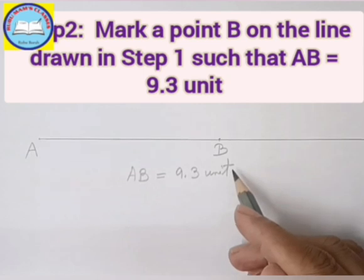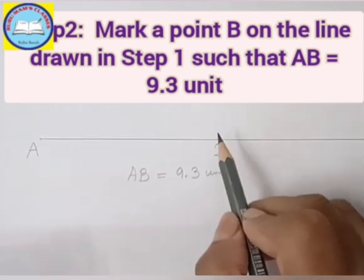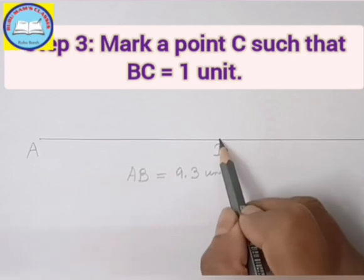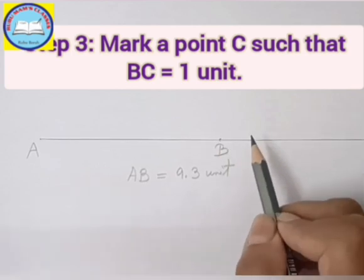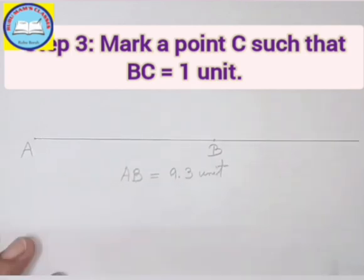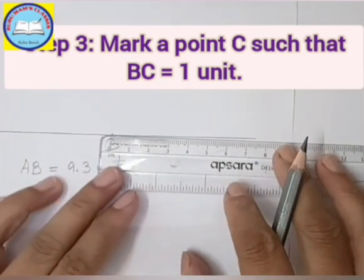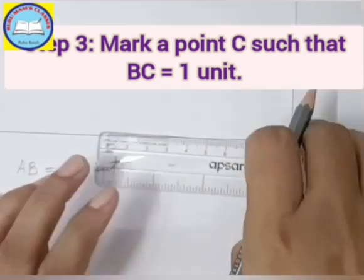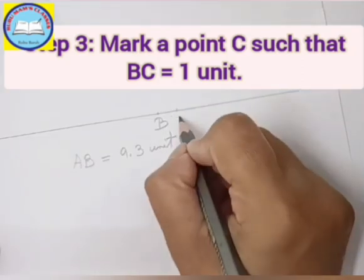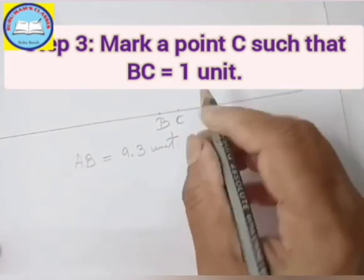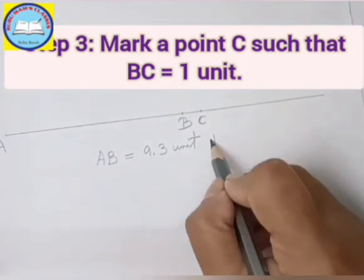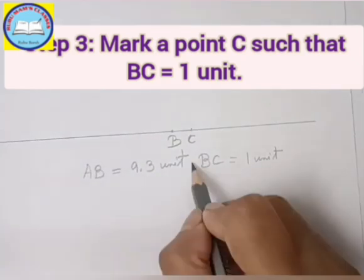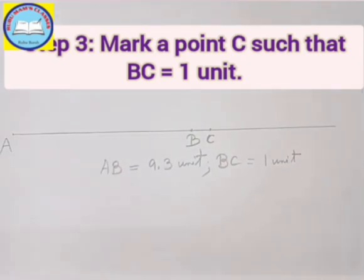Now step 3: from point B, you have to mark 1 more unit on the line. So I have 1 unit from B, and that point is C. BC is equal to 1 unit.